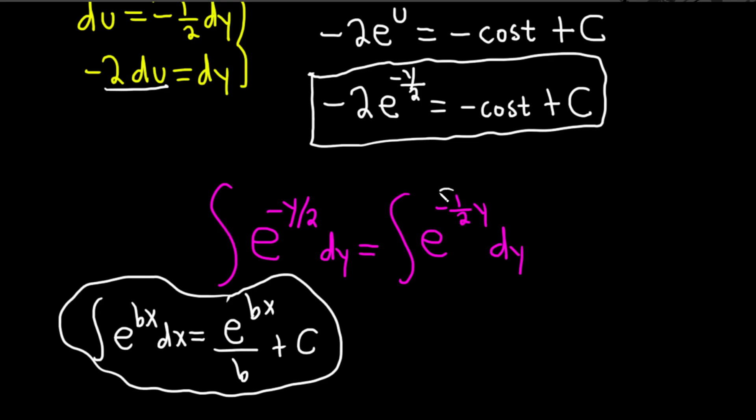So in our particular example the b takes the role of negative 1 half. So we just divide by negative 1 half. So it's going to be e to the negative 1 half y divided by negative 1 half plus c.